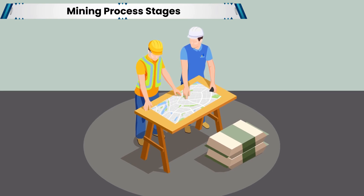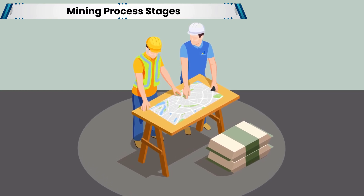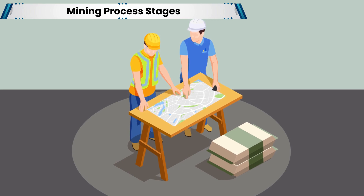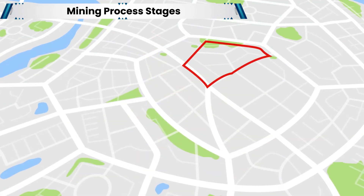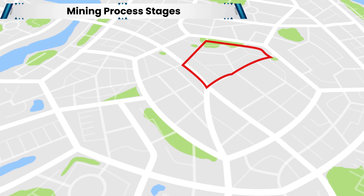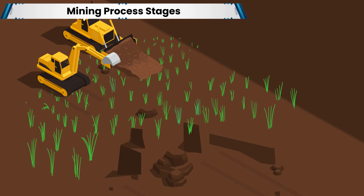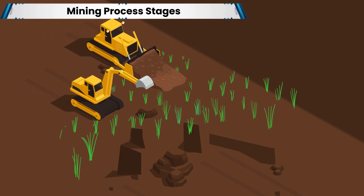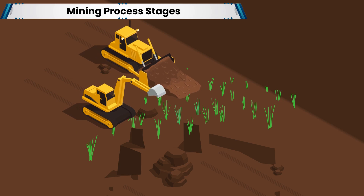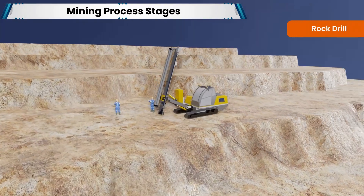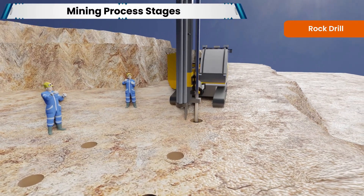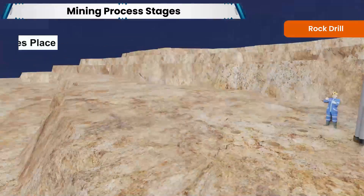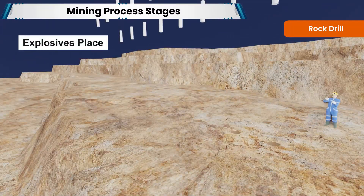The first step is identification of a quarry site through geological surveys. Once a suitable location is identified, the area is prepared for mining, which may involve clearing vegetation and topsoil. The extraction process often begins with drilling holes into the rock using a rock drill to strategically place the explosives.